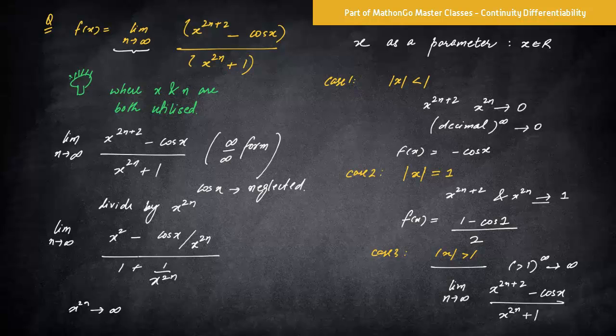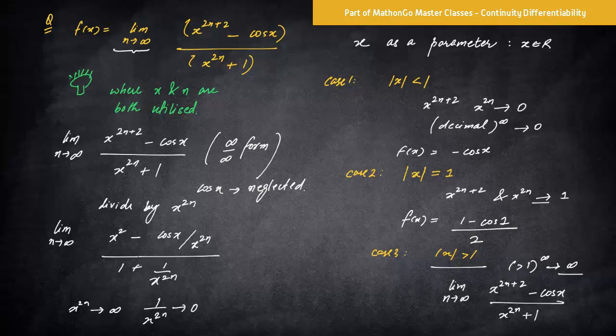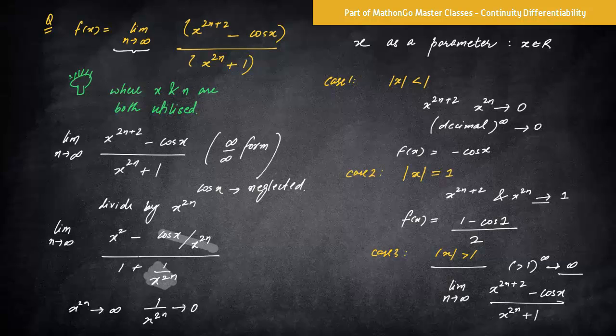Now, we know that x raised to power 2n approaches infinity in this particular case, because mod x is greater than one, we have already defined that. So one by x raised to power 2n would approach zero. So all the terms having this particular value, this, and this will become zero. So you will only be left with nothing but x square. Got it. And this is how the entire formulation of f(x) will happen.